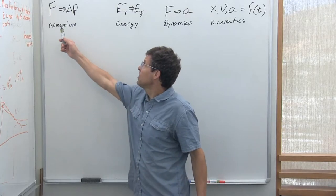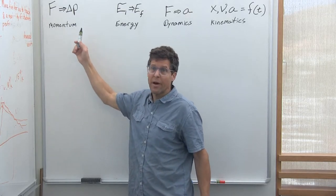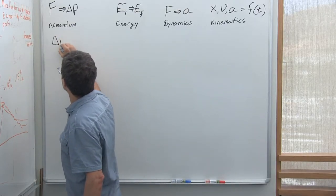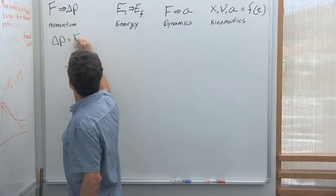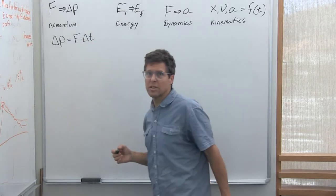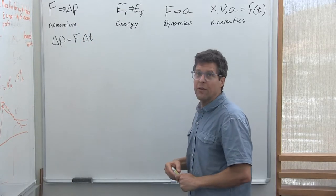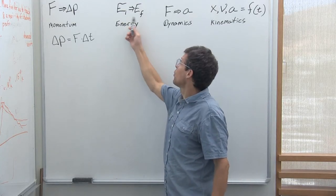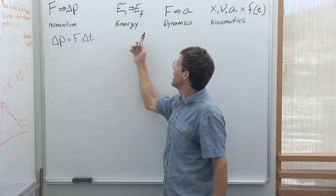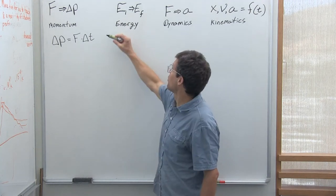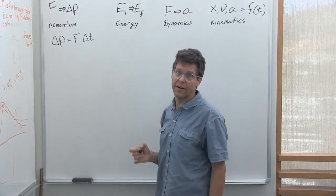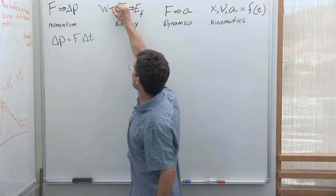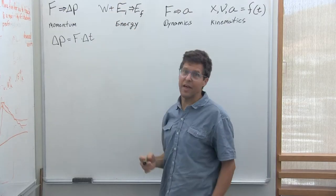For instance, if we see that forces change momentum, then we can use the momentum lens and say that change in momentum is equal to force times delta T. If we can see an energy transformation from one kind of energy to another, we know those energies are going to be equal and we'll use the energy lens — setting all our initial energies equal to our final energies, or adding any extra work that comes in from outside the system.